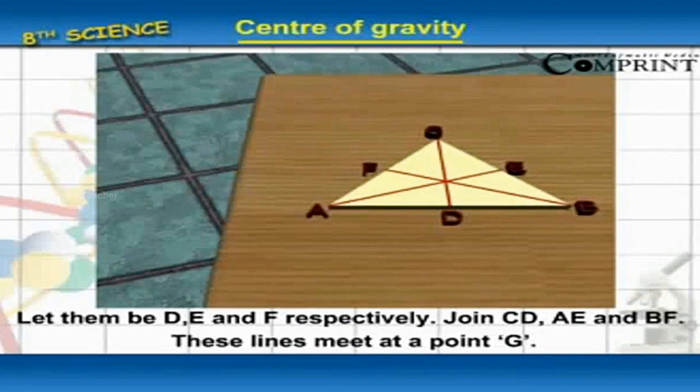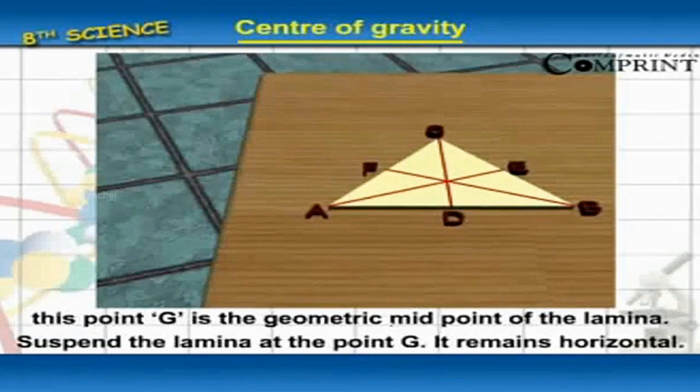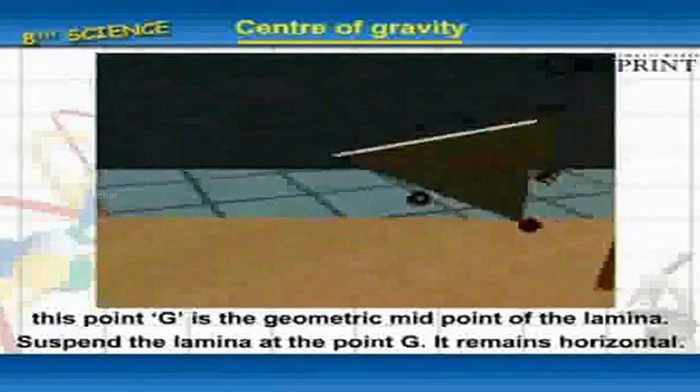These lines meet at a point G. This point G is the geometric midpoint of the lamina.